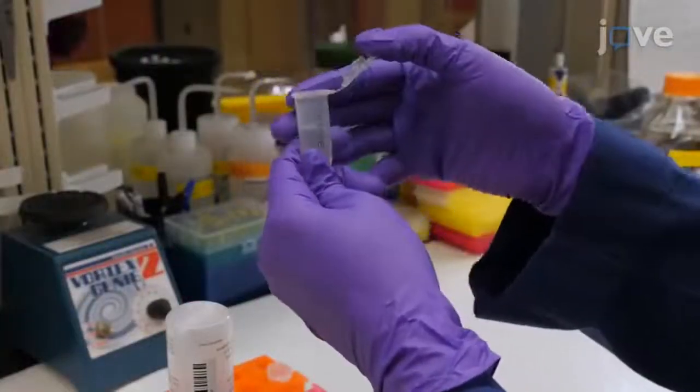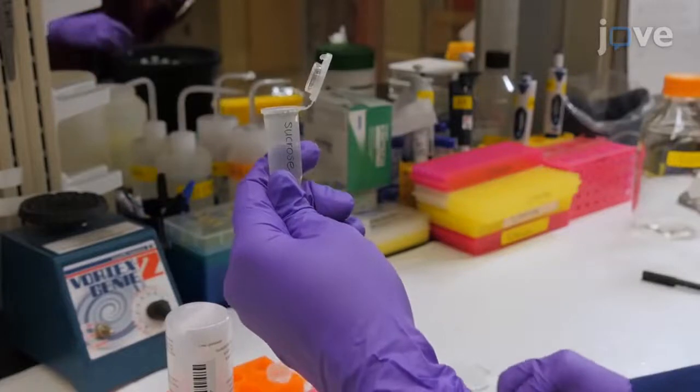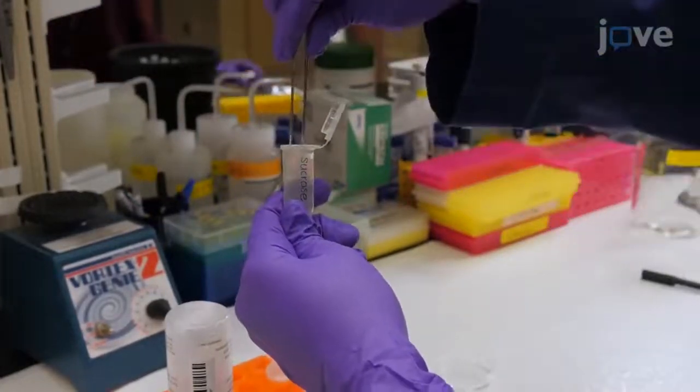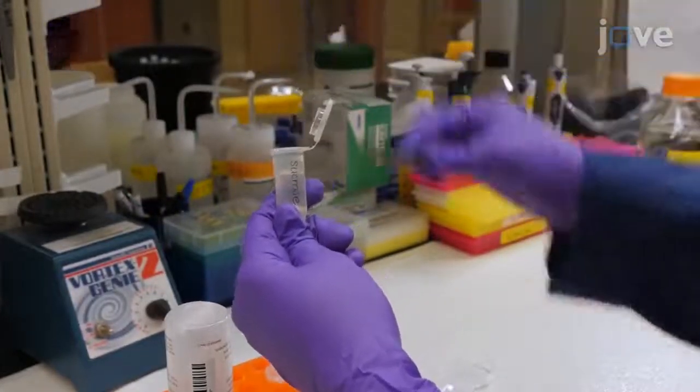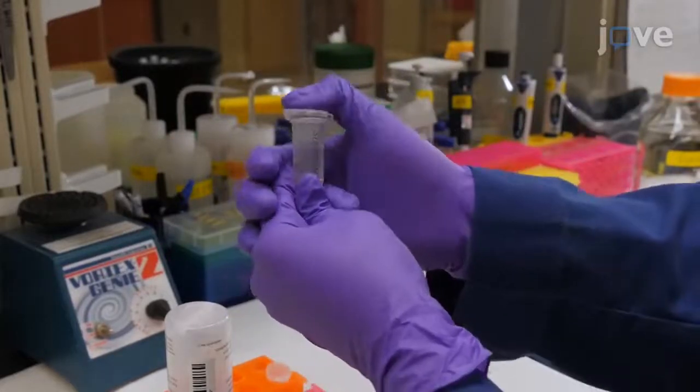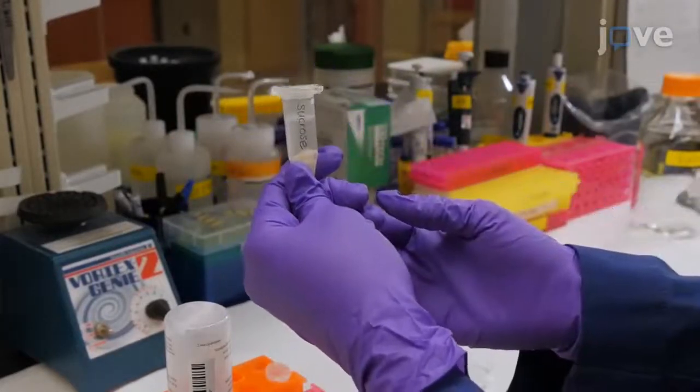Use forceps to transfer the brain into a 50 mL conical tube filled with 25 mL of 30% sucrose solution. Incubate it at 4 degrees Celsius for 48 to 72 hours until the brain sinks to the bottom of the tube.